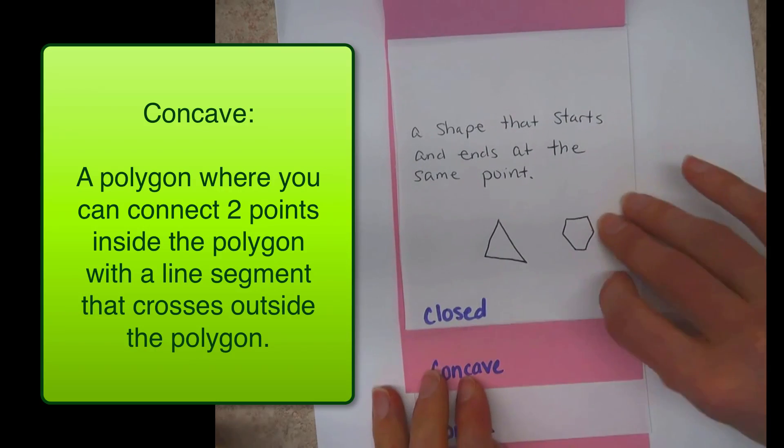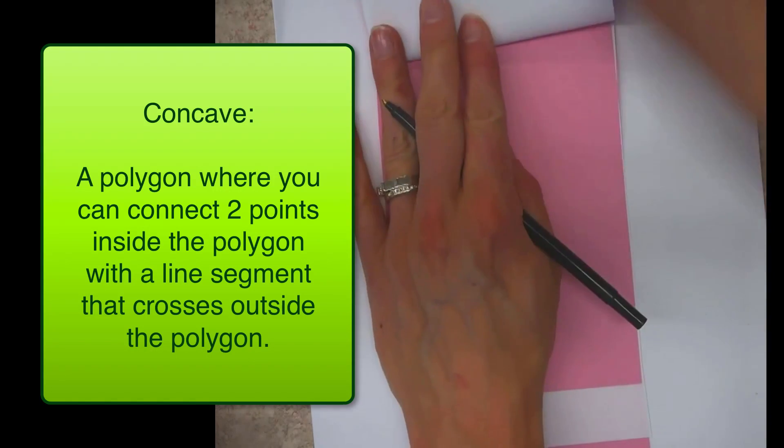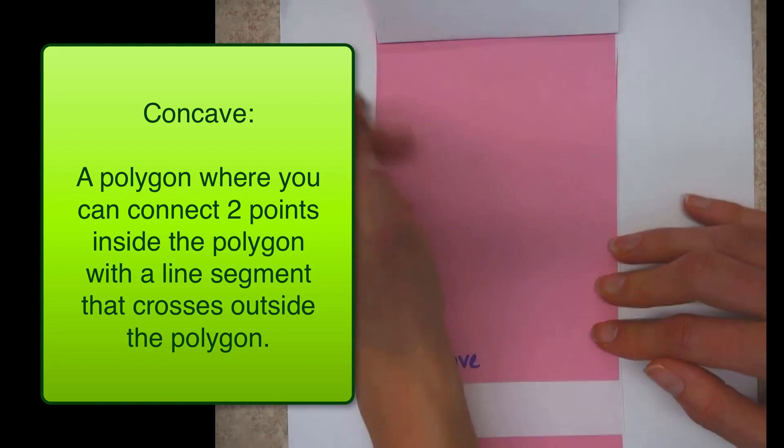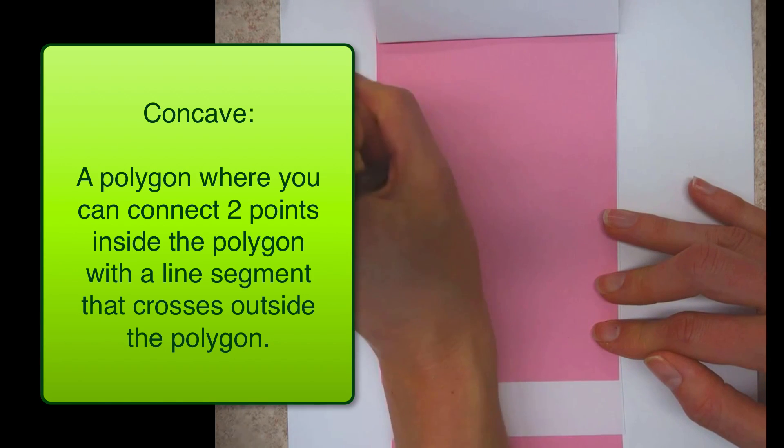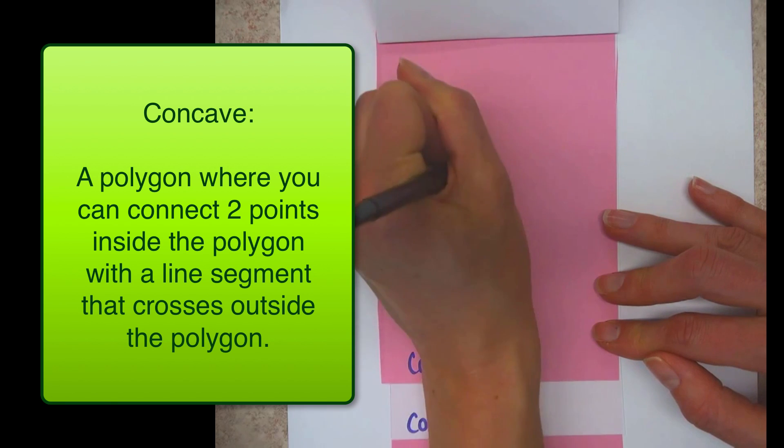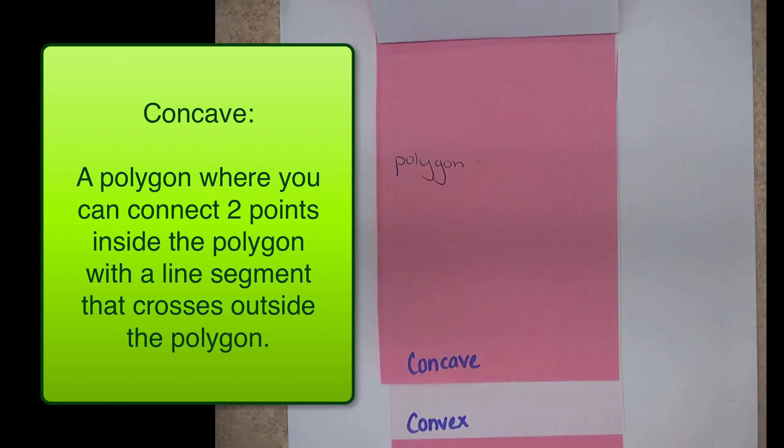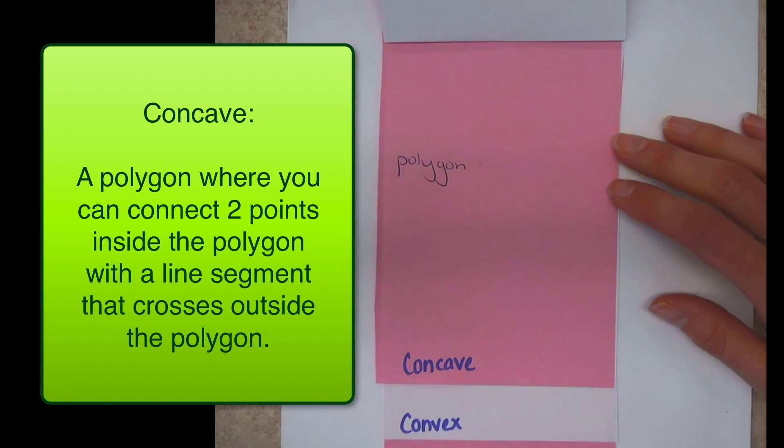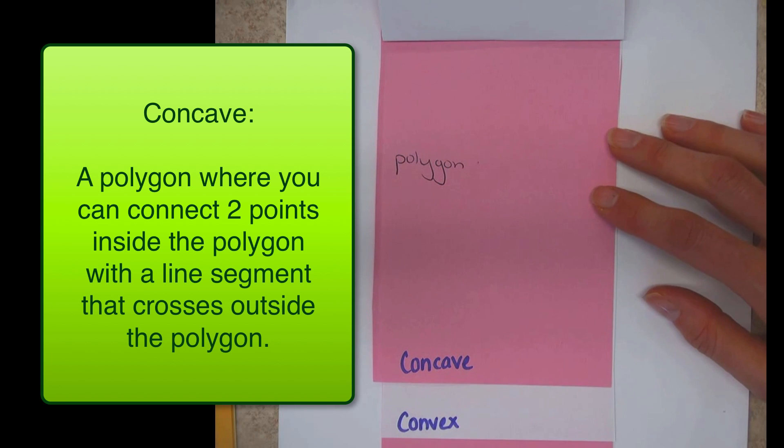Our next two are concave and convex. So concave is a polygon, which we have, where you can connect two points inside the polygon with a line segment that passes outside the polygon. What? So how are we going to be able to explain this? Anyway, basically, we can write this definition down, but the picture is what's really going to help you.